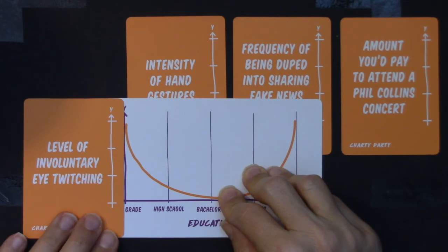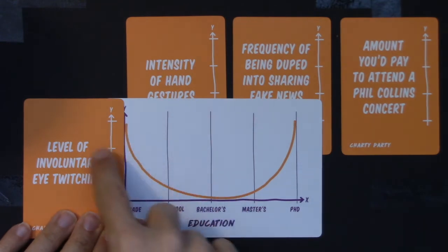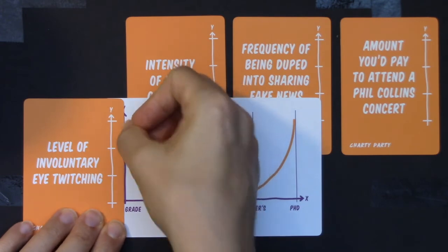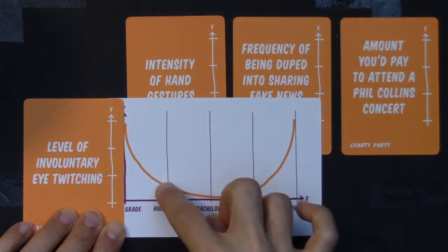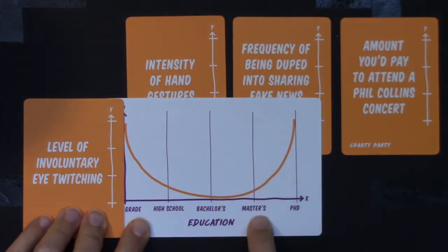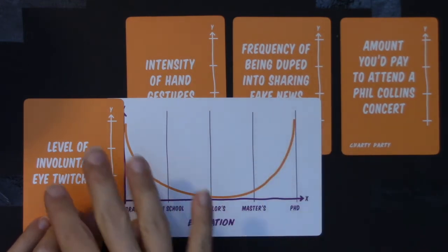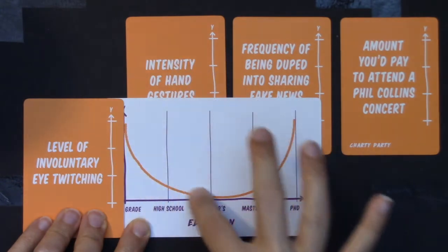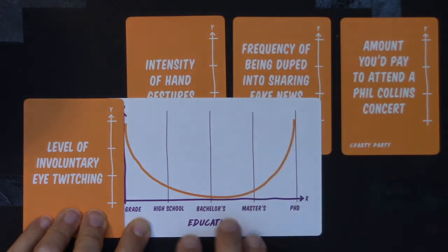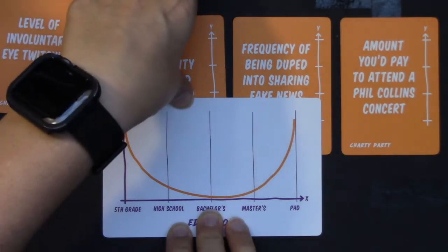Level of involuntary eye twitching — maybe in fifth grade you have a lot of it, and as you get more educated that eye twitching heads down. But I don't know why, if you got an advanced degree like a master's or PhD, your involuntary eye twitching would go up. I feel like this makes some sense, but I'd attribute it more to age than education. So I'm going to push this one off to the side — not my favorite choice, but sometimes none of these work.